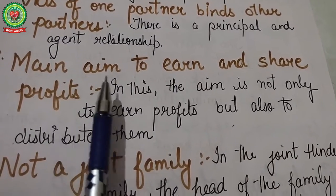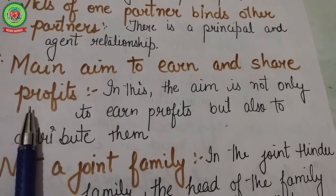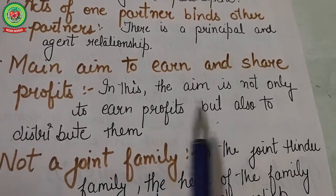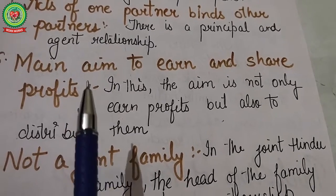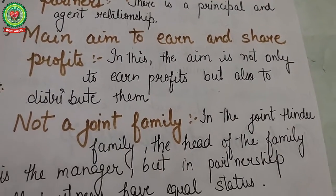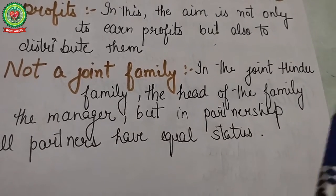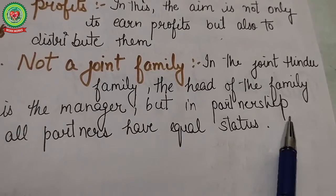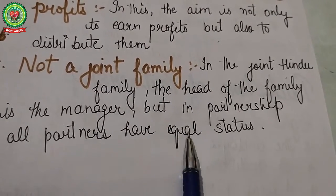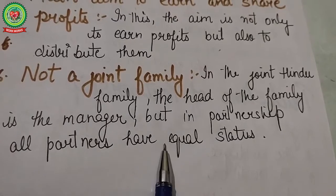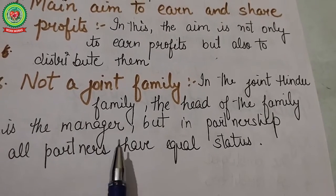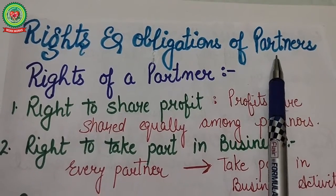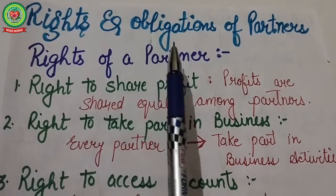Next is that the main aim is to earn and share profits: in partnership the major aim is not only to earn profits but also to distribute them among the partners. Last is that it is not a joint family: unlike a joint Hindu family system where the head of the family is the manager, in partnership all partners have equal status in the organization.